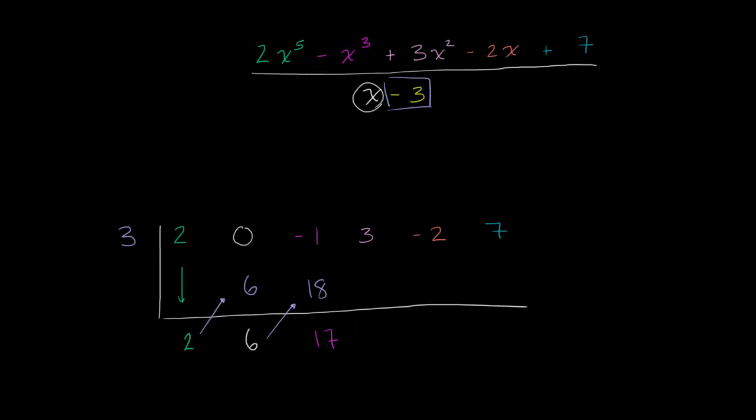Multiply that times the 3. 17 times 3 is 51. 3 plus 51 is 54. Multiply that times 3. The numbers are getting kind of large now. So that's going to be, 50 times 3 is 150, 4 times 3 is 12.